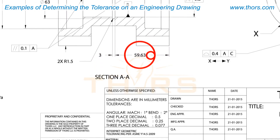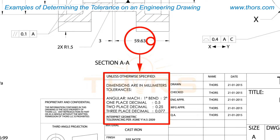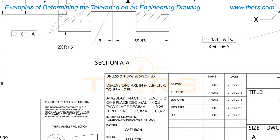the tolerance for that dimension will be referenced in the title block. Whether the drawing displays imperial or metric units, the same manner of determining the tolerance applies.